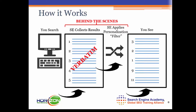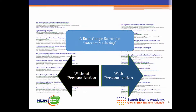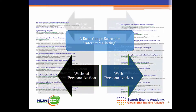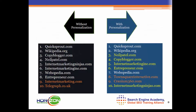The results on the left, Google refers to as verbatim results. The ones on the right are ones that have been personalized. Here's an example from a search I conducted for internet marketing. The results on the left are without personalization, and the ones on the right are with personalization.